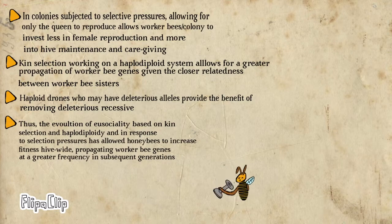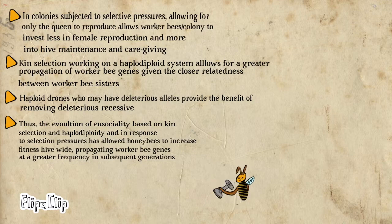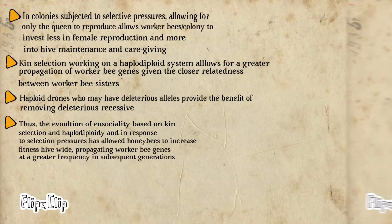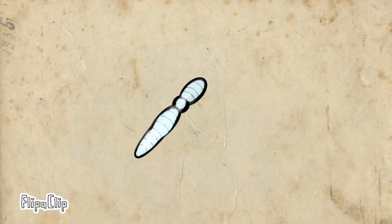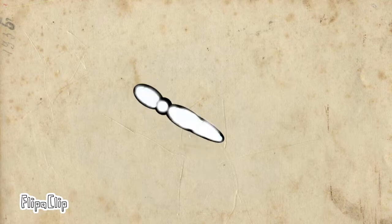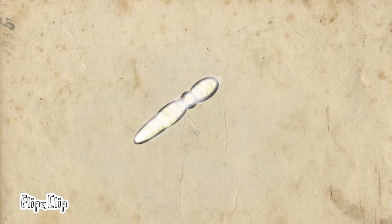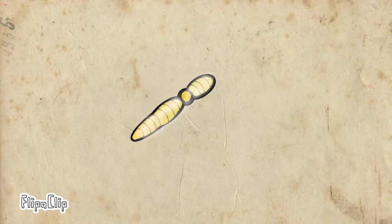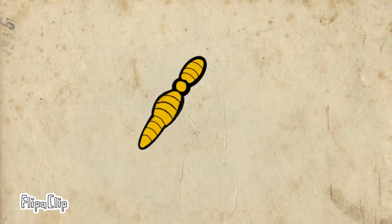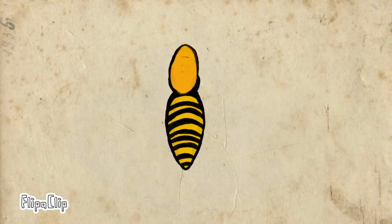Thus, the evolution of eusociality based on kin selection and haplodiploidy has allowed honeybees to increase the fitness of all individuals in the beehive in response to selective pressures, as it allows genes to be passed at a greater frequency in subsequent generations. Plastic genes allowing for haplodiploidy and eusociality would also increase in subsequent generations, enabling the conservation of the eusocial system.